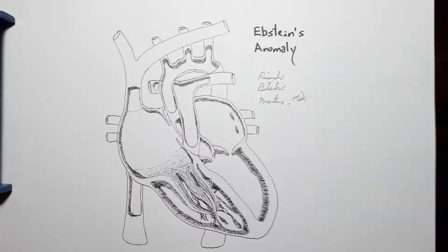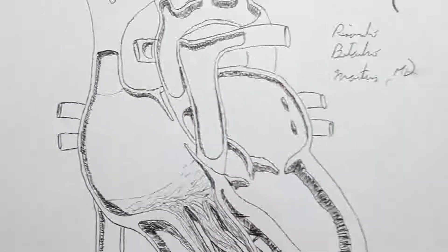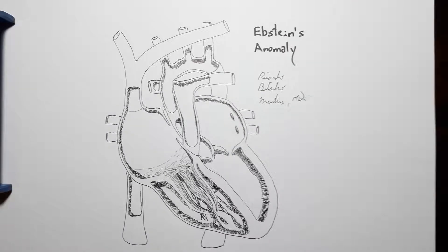In most patients, having an atrial septal defect would not lead to cyanosis, at least not until Eisenmenger's syndrome developed. However, Ebstein anomaly is considered a congenital cyanotic heart disease.